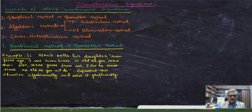Aptab tells his daughter: seven years ago, I was seven times as old as you were at that time. Also, three years from now — that is, after three years — I shall be three times as old as you will be. Represent this situation algebraically and solve the problem.